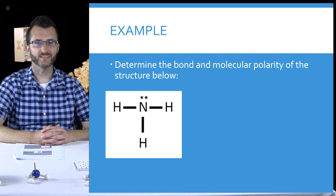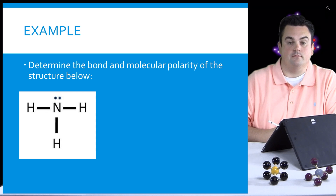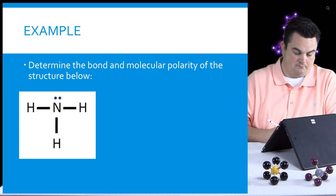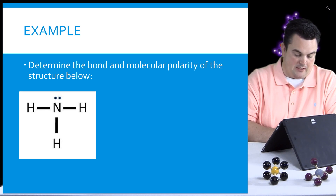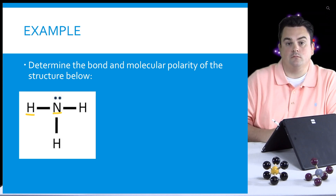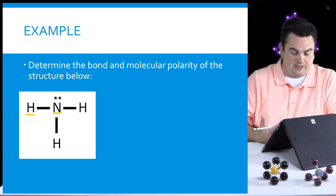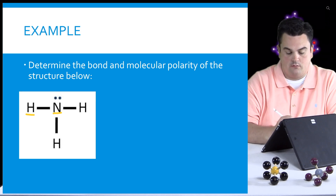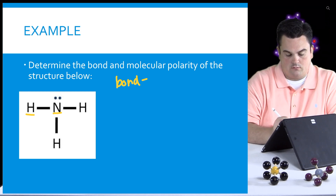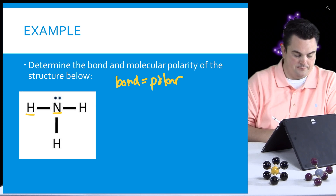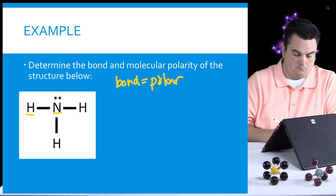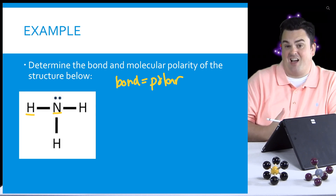Let's take a look at another example. Determine the bond and molecular polarity of NH3 ammonia. We want to begin by looking at the bond polarity. We have H and N — they're both different elements with different electronegativities, so it must be a polar bond. Different atoms, different electronegativities means we have a polar bond. Now our molecule may be polar or it may be nonpolar — we have to find out. The arrow always points towards the element that has the higher electronegativity. Between N and H, nitrogen has the higher electronegativity.